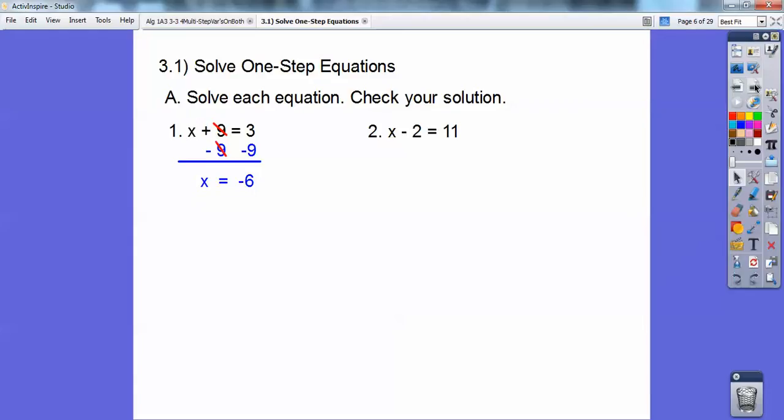x minus 2 equals 11. So I'm going to go ahead and add 2 to both sides. And the 2s cancel, and 11 plus 2 is 13. Go ahead and check it. 13 minus 2, yeah, that equals 11. So the answer is 13.